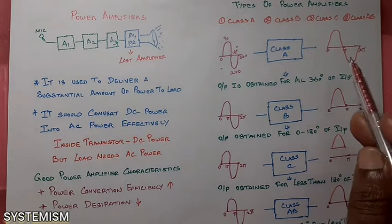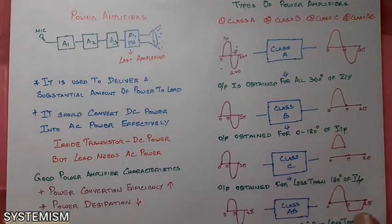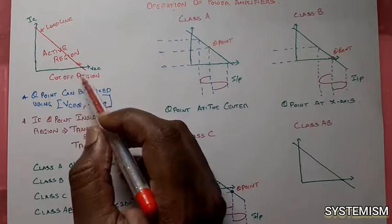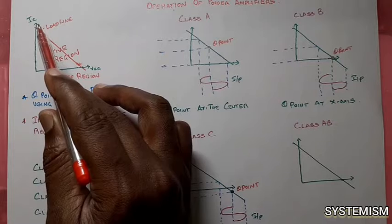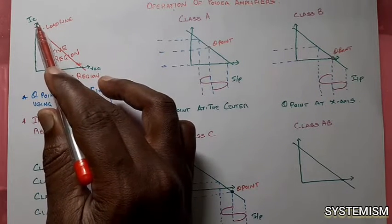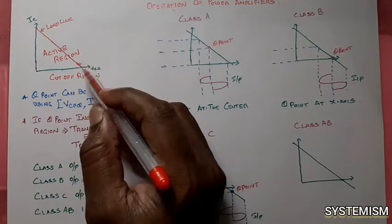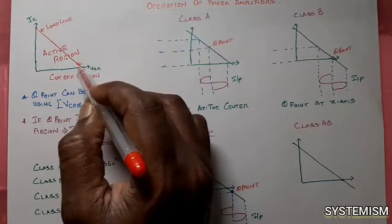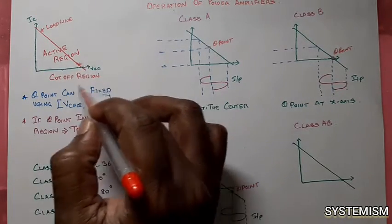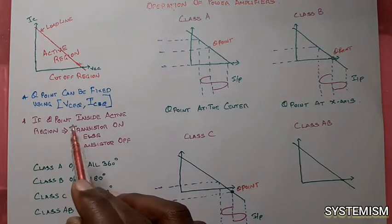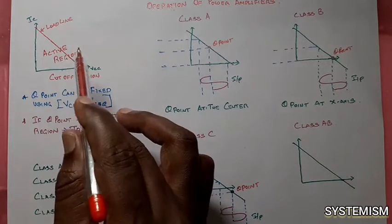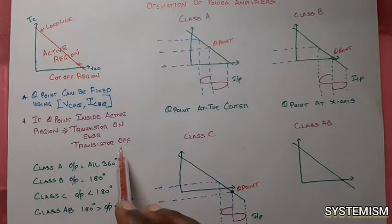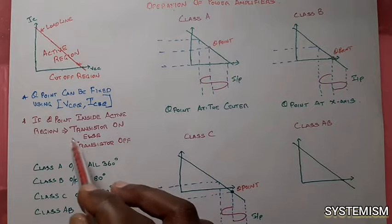We need to know the concept behind the operation of these amplifiers. When we think about a transistor, we know about its DC characteristics and output characteristics — that is the graph between output current and output voltage. We have also learned about the load line in DC analysis. We learned about the active region and the cutoff region below it. If the transistor's Q point is available inside the active region, the transistor is considered on. If not, the transistor is considered off and the output will not come.